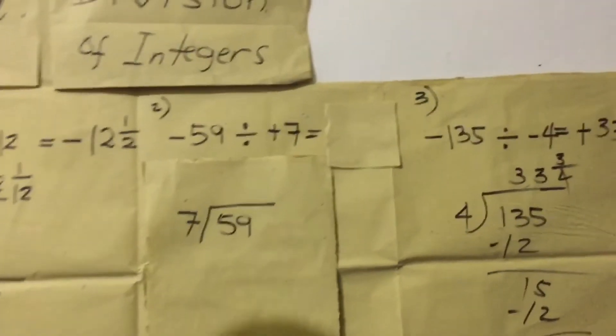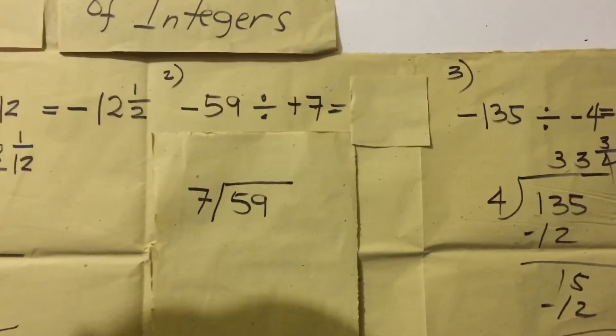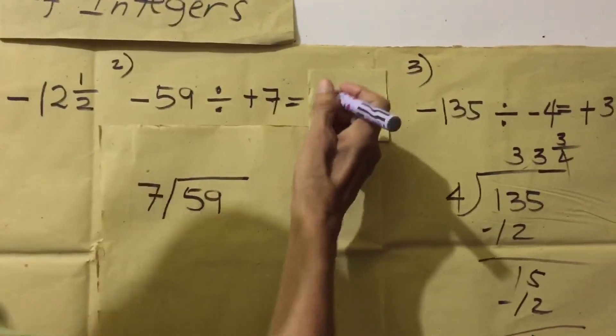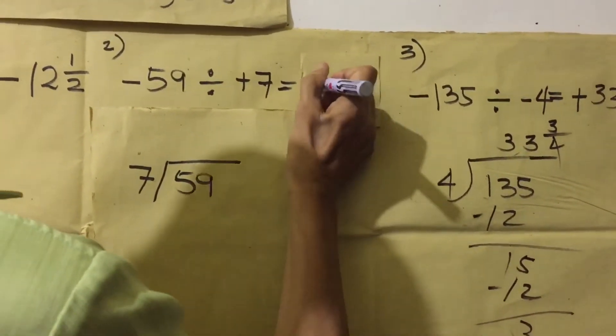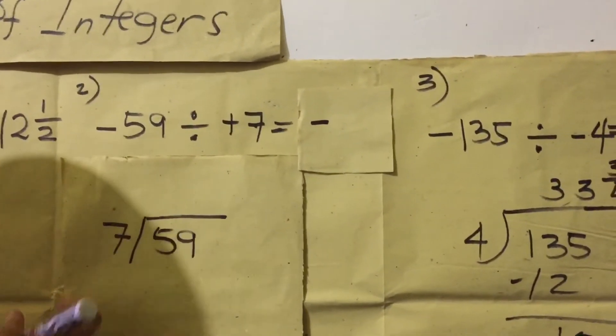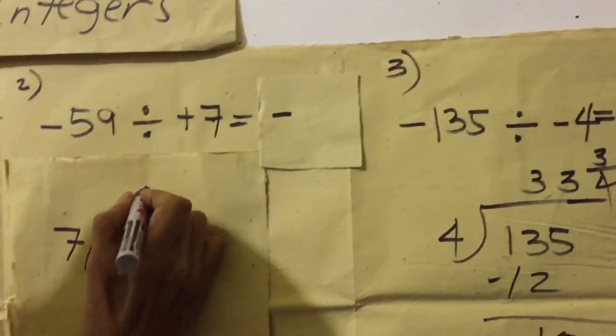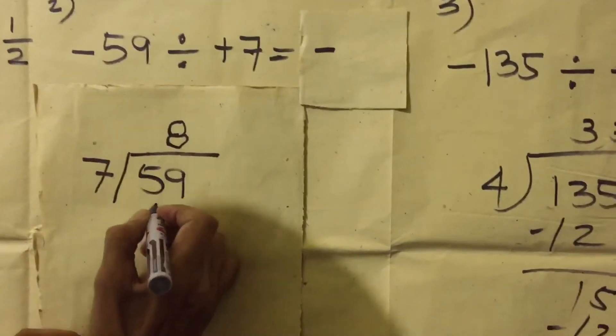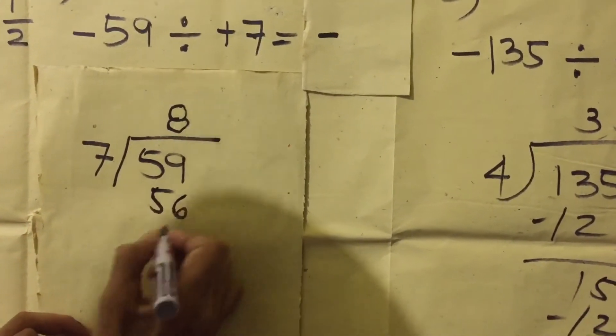We have to answer number 2. Negative 59 divided by positive 7 equals negative. Then, divide 59 divided by 7. My estimate is 8. 8 times 7 equals 56.